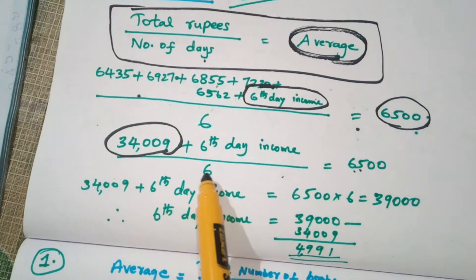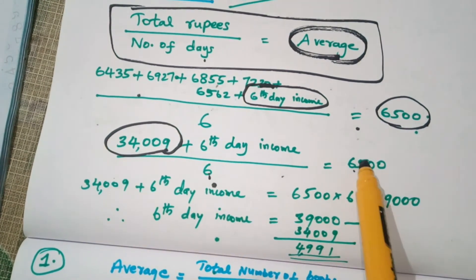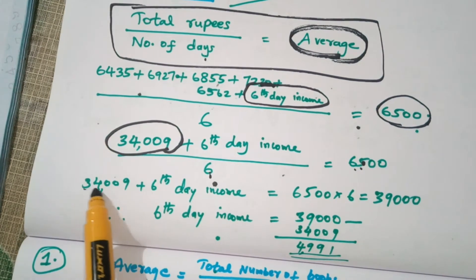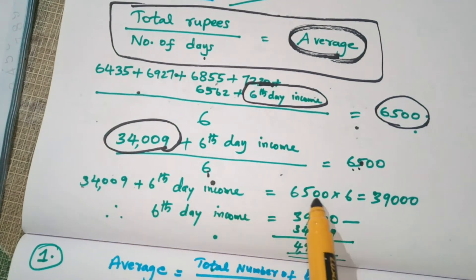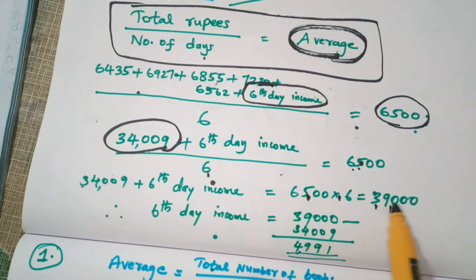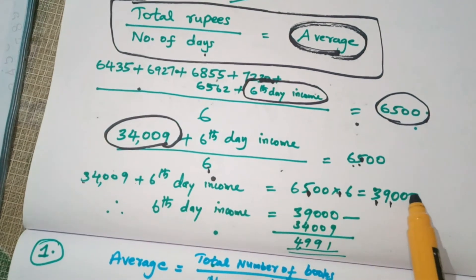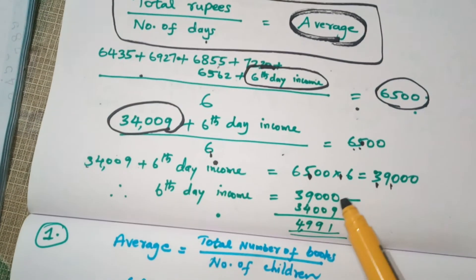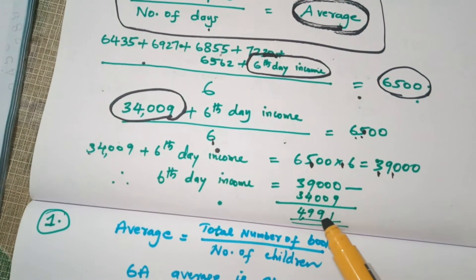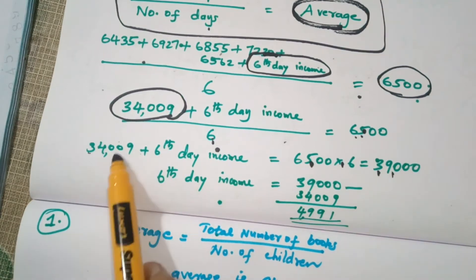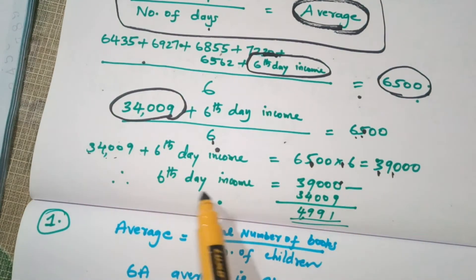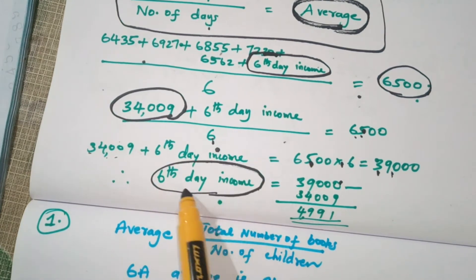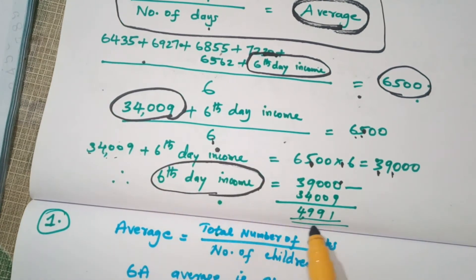Now, what is the 6th day income? Let's see. 34,009 plus the 6th day income equals 39,000. So, the 6th day income equals 39,000 minus 34,009. The 6th day income equals 4,991.